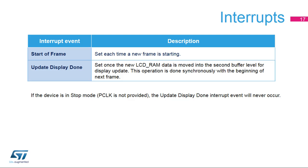Two interrupt events are available with the LCD controller; they both share the same interrupt vector. A start of frame interrupt is set each time a new frame starts to help synchronize software events. The update display done interrupt is set once the new LCD RAM data is moved into the second buffer level (LCD display) to update the display. This operation is performed synchronously at the beginning of the next frame.